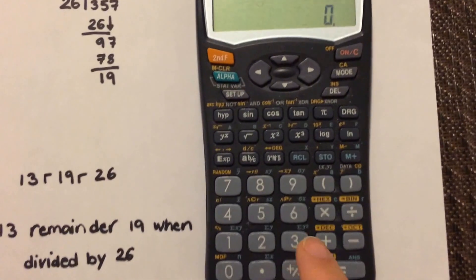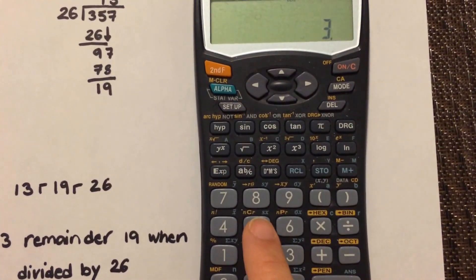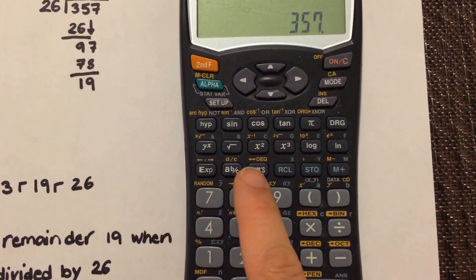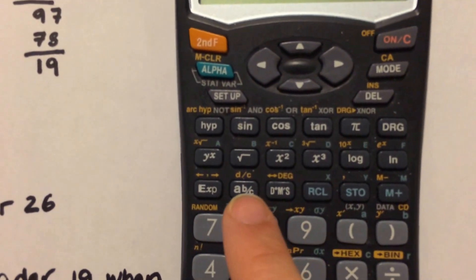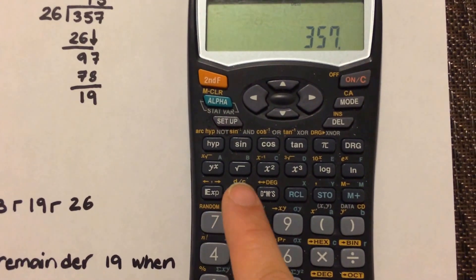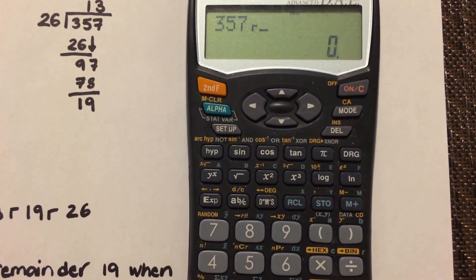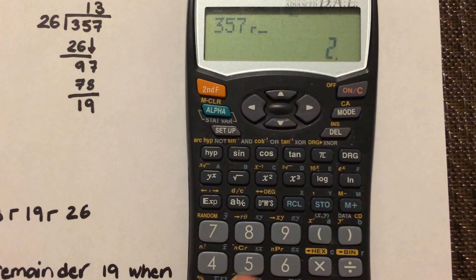you're going to go 357, use this fraction key. So A B over C, divided by, we're dividing it by 26,